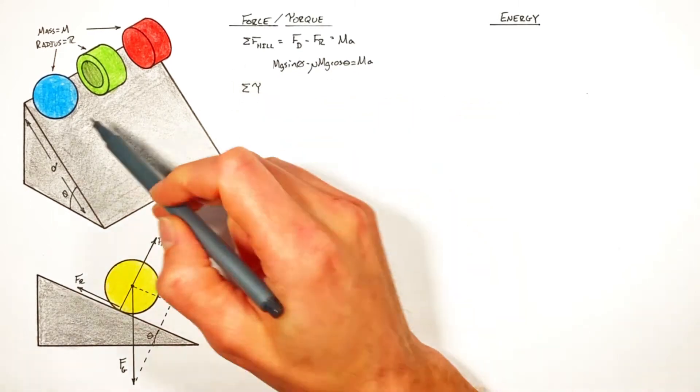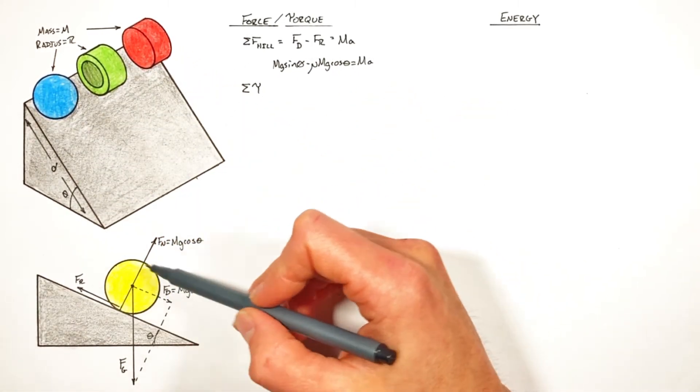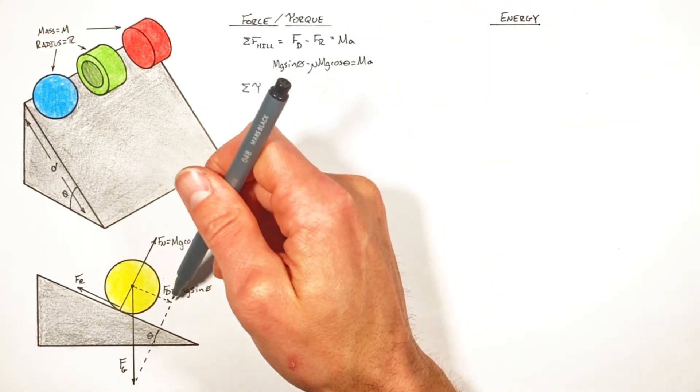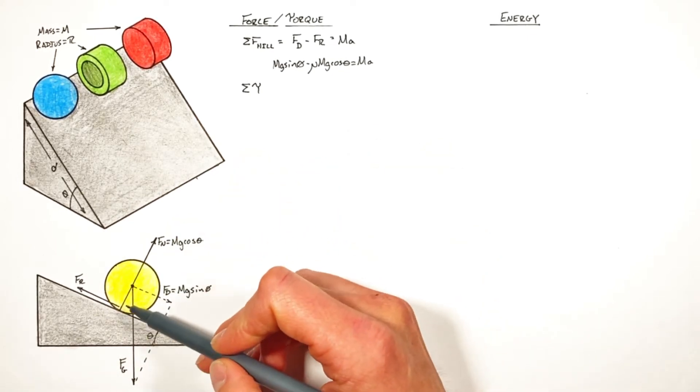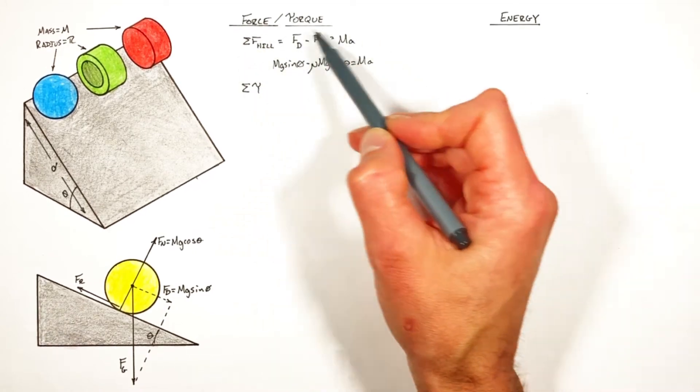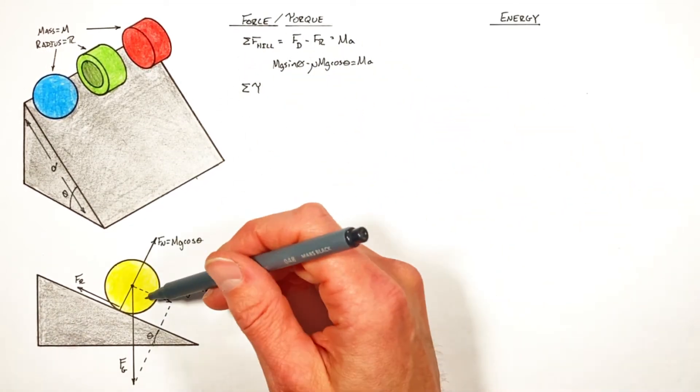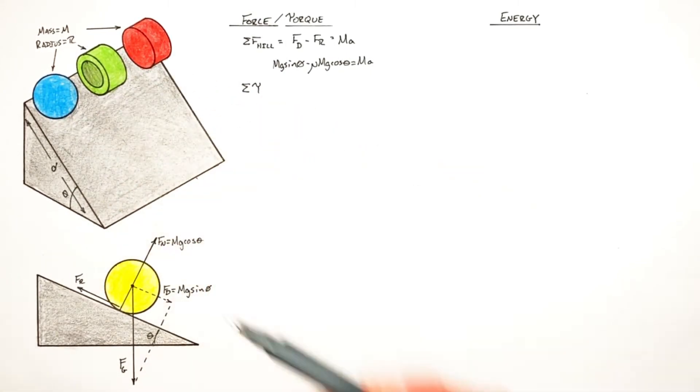So we need to look at the sum of all torques acting on either of these objects in order to analyze the rotation of the objects. Newton's second law only tells us about the linear motion of the objects down the hill. It doesn't do anything to help us figure out the rotation of the object. So once we've come up with the expressions for the linear motion as well as the rotation, then we'll be able to put them together and come up with actual rolling motion of these objects down the hill.